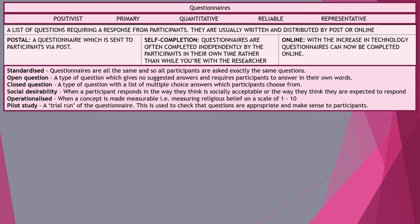Some key concepts: questionnaires are a standardized method, meaning every questionnaire is the same — all participants answer the same questions in the same order, generally in the same format. Open questions are questions where there is no suggested answer, often a text box, found at the end of a questionnaire where you can write any response you want.